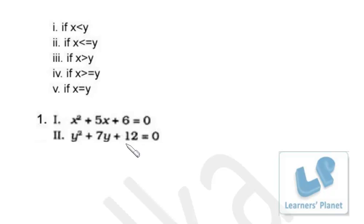x² + 5x + 6 = 0. So factors will be (x + 2)(x + 3) = 0. That means x is either -2 or -3.